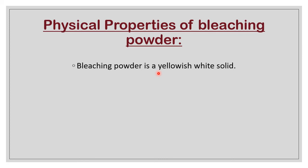Why does bleaching powder smell like chlorine? It is because it is continuously giving off chlorine gas to the atmosphere — bleaching powder on decomposition gives chlorine gas. It is due to the chlorine gas coming out of the bleaching powder, and some impurities that give it a yellowish color. That's why it is described as a yellowish-white solid.